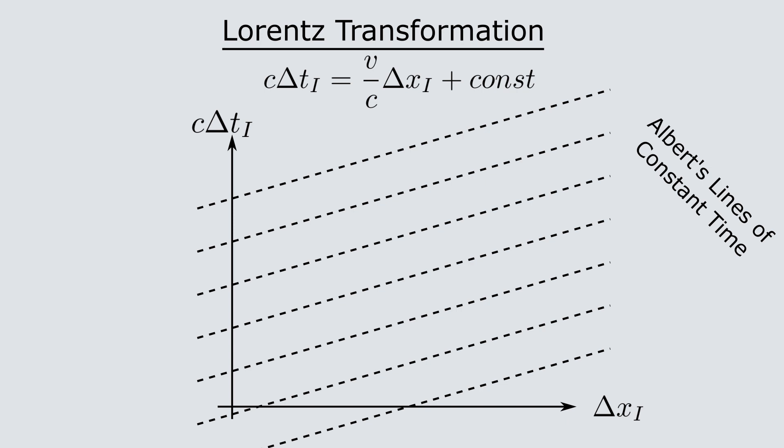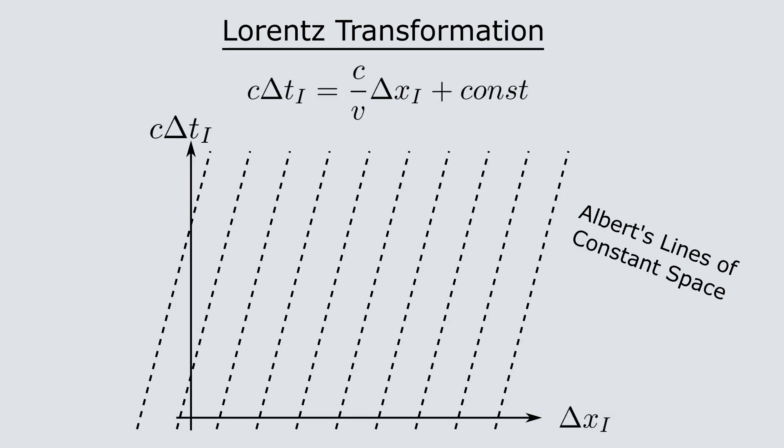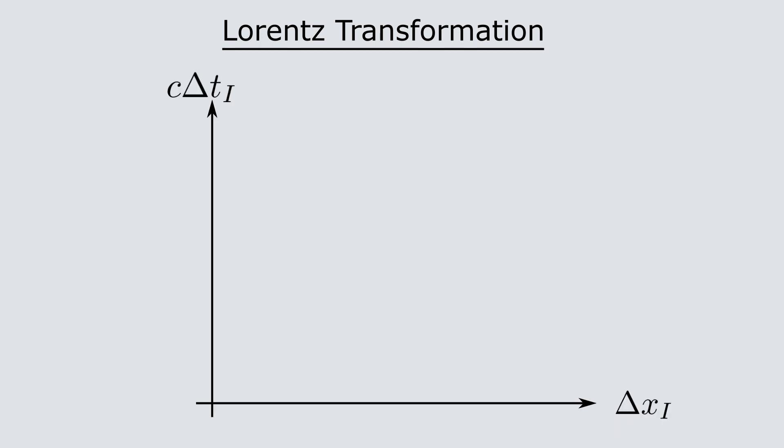Similarly, we can plug in delta xa equal to a constant and again solve for c delta ti. Now, we find that fixed spatial points, according to Albert, are again slanted lines in Isaac's coordinates, this time with slope c divided by v. So, if we plot Albert's spacetime diagram in Isaac's coordinates, we see that the axes to Albert's diagram are pinched inwards.